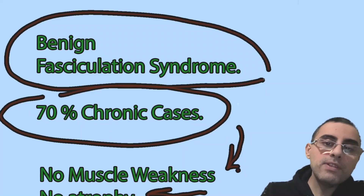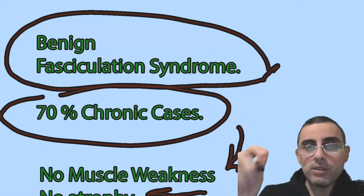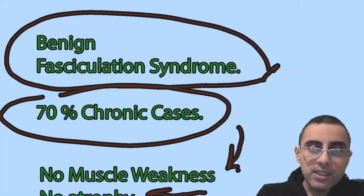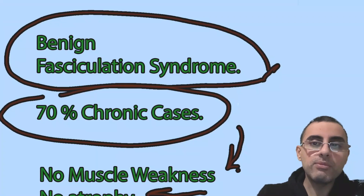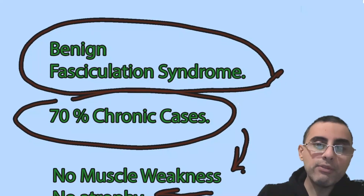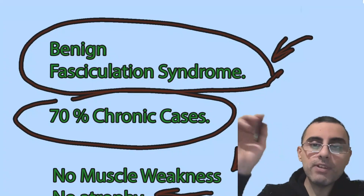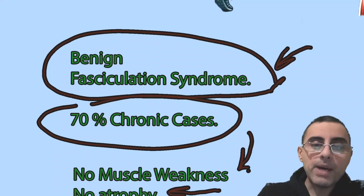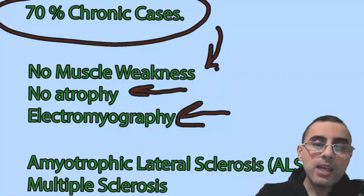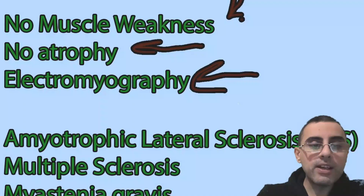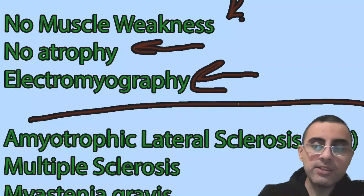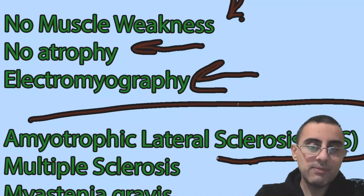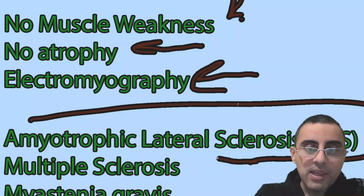If fasciculations have lasted only a few days, it is acute fasciculation — not benign fasciculation syndrome. Benign fasciculation syndrome applies when fasciculations occur regularly over several months or even years. However, we should know that fasciculation is also an important characteristic of amyotrophic lateral sclerosis, which is a very serious and dangerous disease.